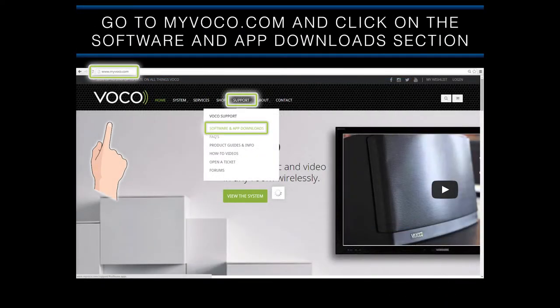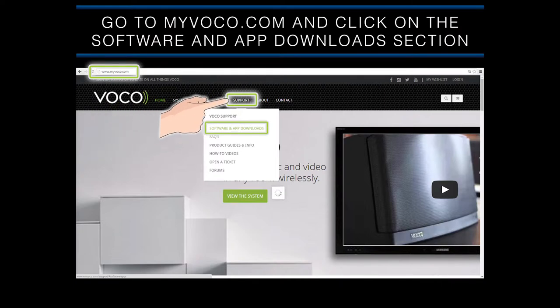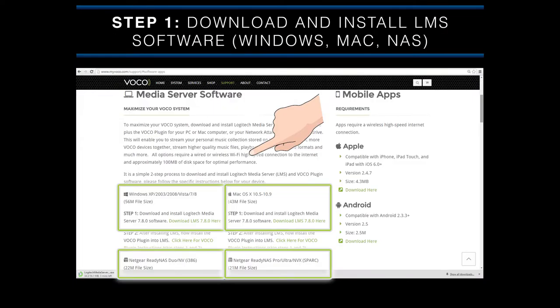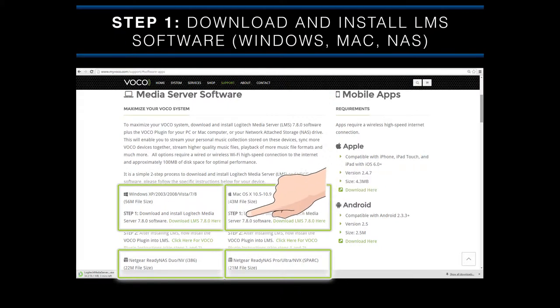The first thing you will want to do is go to MyVocal.com, click on the Support link, then the Software and App Downloads option. This page lists all the different platforms that LMS software is available for. Please find your appropriate platform — for example, Windows — and click the link in Step 1 that says 'Download LMS 7.8.0 here.' After clicking the link, download and install LMS software on your computer or NAS drive.